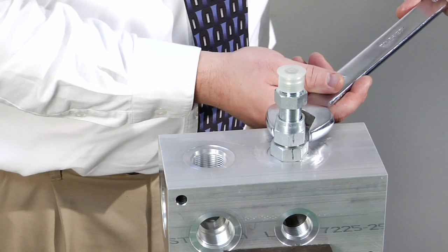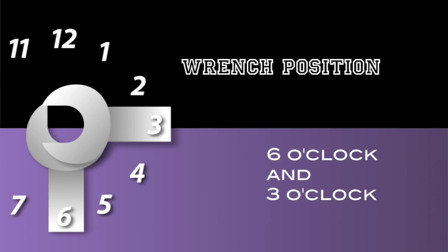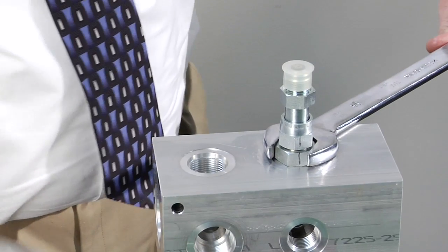Place a wrench on the wrench pad next to the nut as near the 6 o'clock position as possible. Place a second wrench on nut as near the 3 o'clock position as possible.